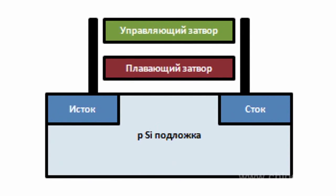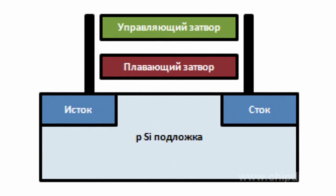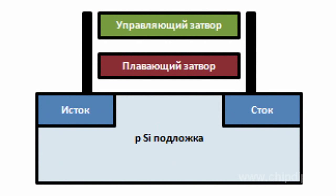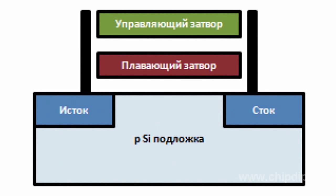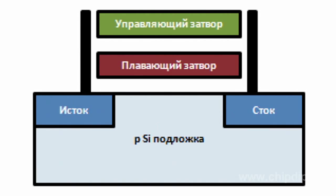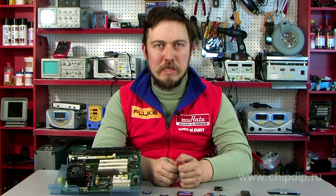In traditional single-level cell, or SLC, devices, each cell stores only one bit of information. Some newer multi-level cell, or MLC, devices can store more than one bit by choosing between multiple levels of electrical charge to apply to the floating gates of the transistor.